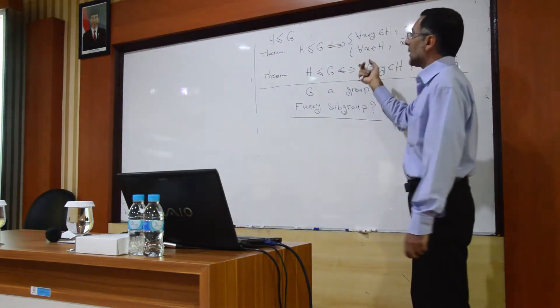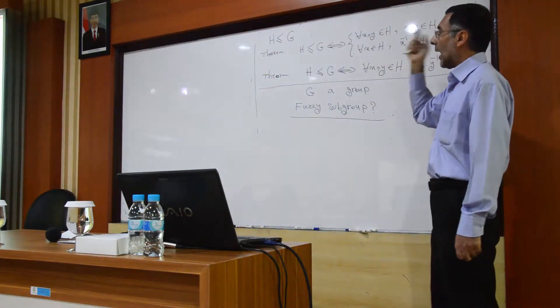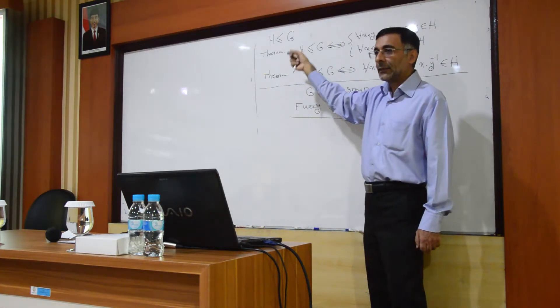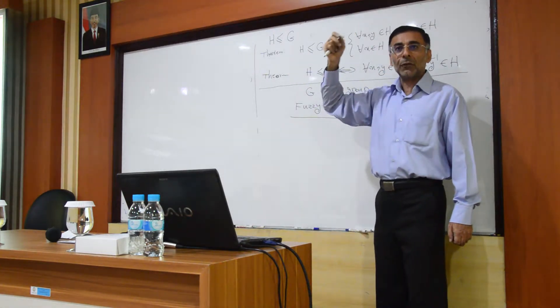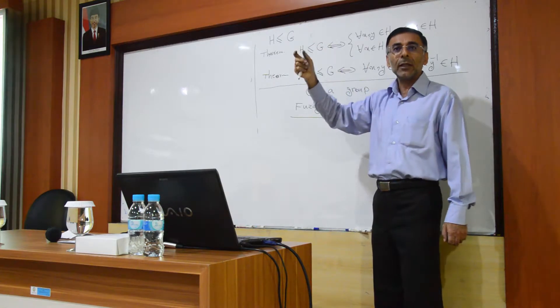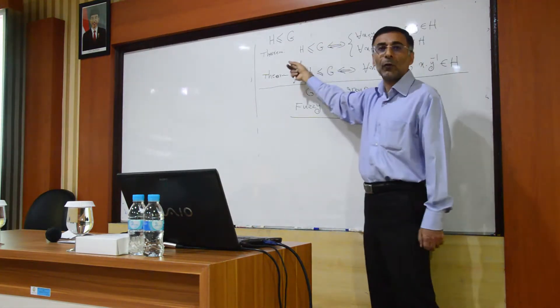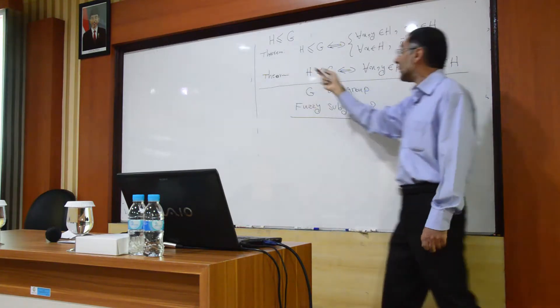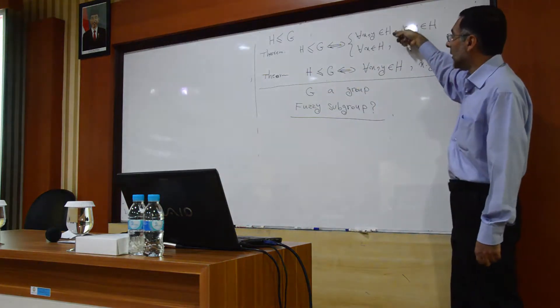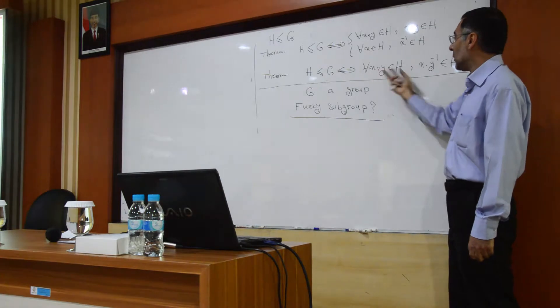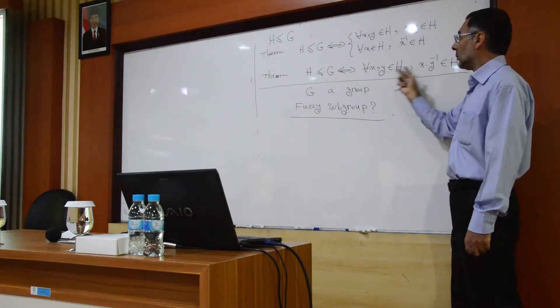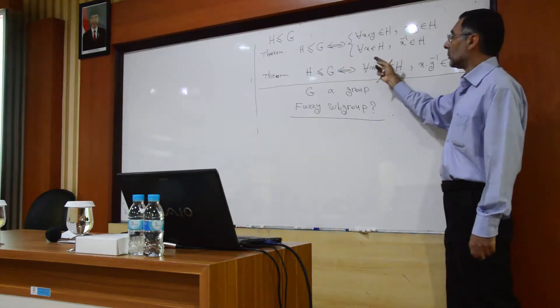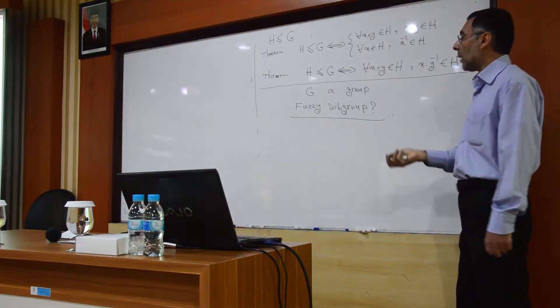In this theory and this theory, you see, it is not necessary to prove that the associative law for H. Since the associative law automatically satisfies for elements of H, only it is necessary to check this and this, or maybe one condition.